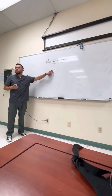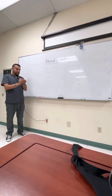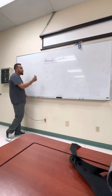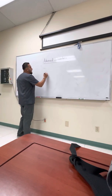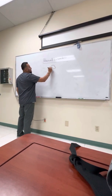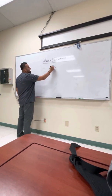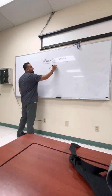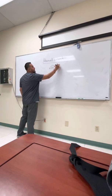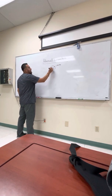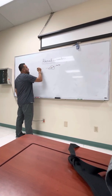In adrenal disorders, you have to remember what's the gland — it is your adrenal gland. Your adrenal gland is on top of the kidneys, and it's got two components: the cortex and the medulla.